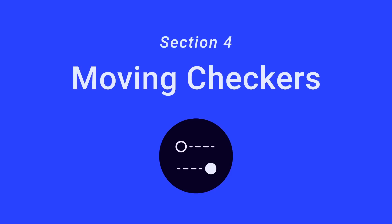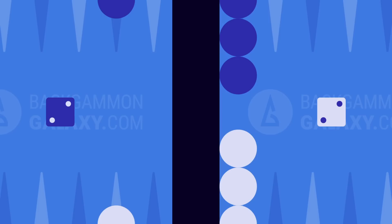Section 4. Moving checkers. Both players start the game by rolling one die each. This is called the opening roll. Both players roll the number 2. If the same number is rolled in the opening, both players must make a reroll.